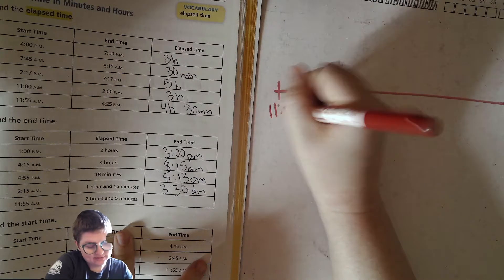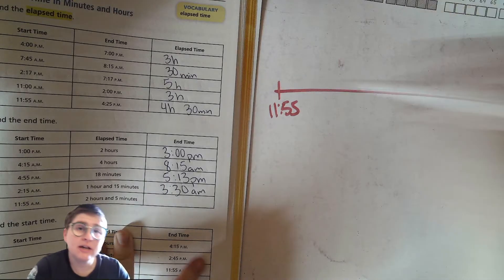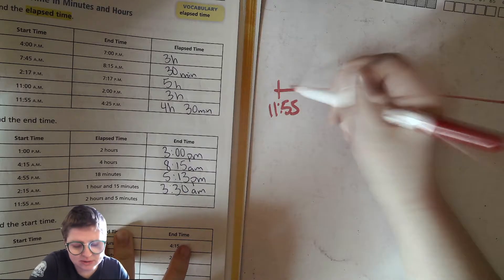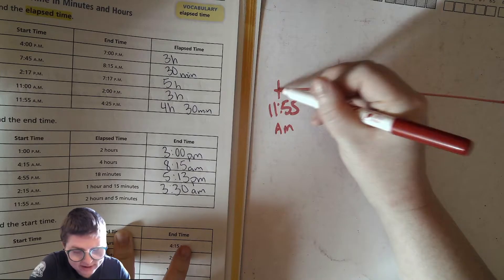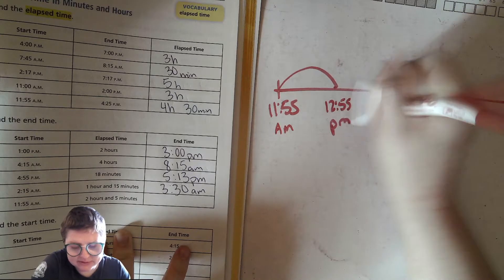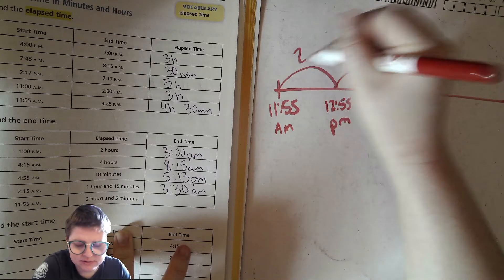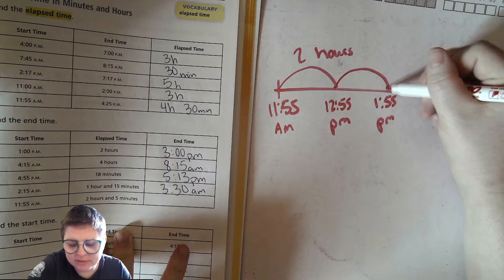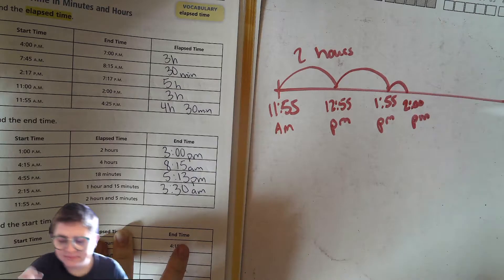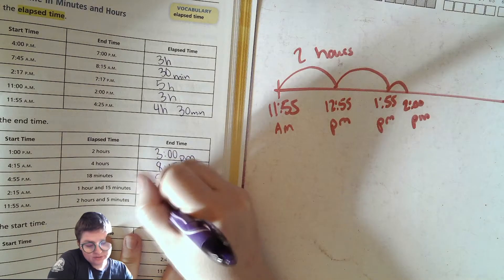Starting at 11:55 AM, hopping forward two hours and five minutes. You can do the hours first or the minutes first — let's do the two hours first. One hour after 11:55 AM is 12:55 PM — pickles and mustard time — and then the second hour brings us to 1:55 PM. Then five more minutes brings us to 2:00 PM, because five minutes after 1:55 is 2 o'clock. So the end time is 2:00 PM.